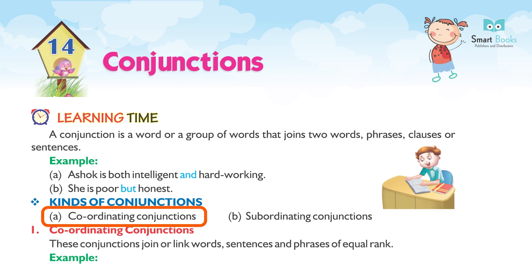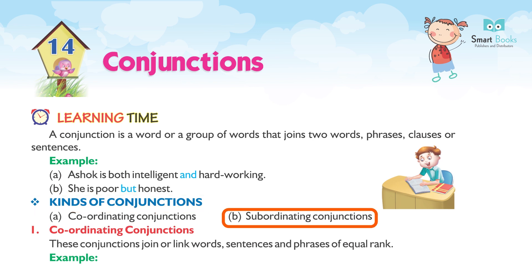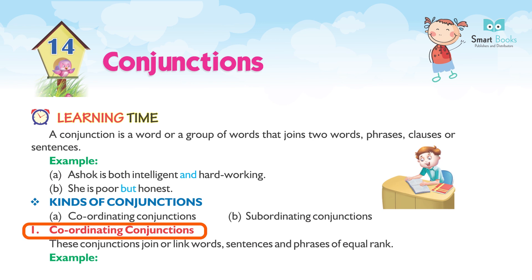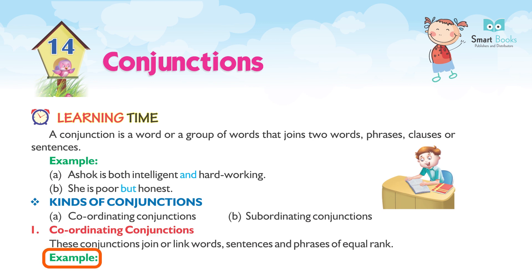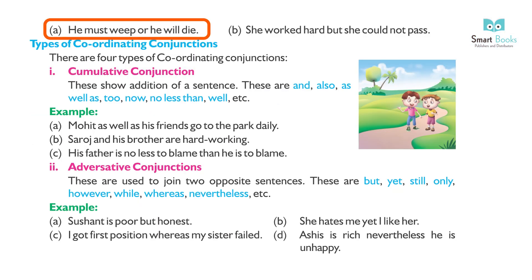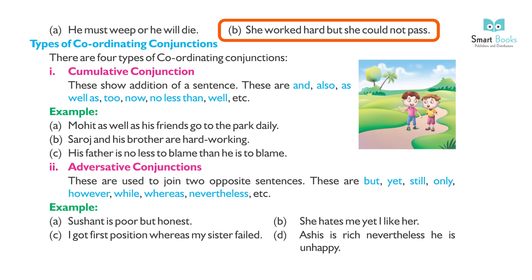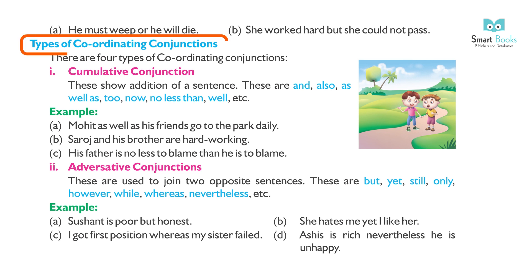Types of conjunctions: (a) Coordinating conjunction, (b) Subordinating conjunction. Coordinating conjunctions join or link words, sentences, and phrases of equal rank. Example: (a) He must work or he will die. (b) She worked hard but she could not pass.